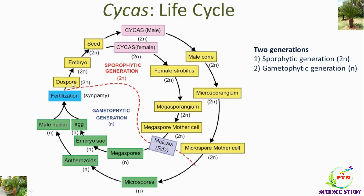The gametophyte is haploid as it is developed from the spore. The fusion of male gamete and female gamete is known as fertilization, or it is also known as syngamy. The product of fertilization is the oospore or zygote, which is diploid in nature, and this is the first cell of the sporophytic generation. This oospore develops into embryo and then into seed. Meiosis is known as the reduction division and fertilization is also known as syngamy.